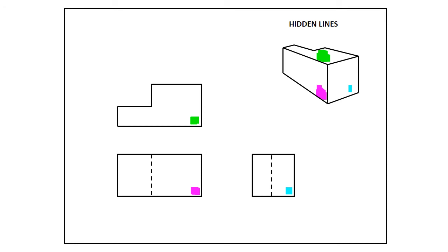Here's another one that's got some hidden lines in it, but you can see I've marked with the colors — the fluorescent green — they match up. We're taking our isometric view, which is up in the upper right-hand corner, and translating that into a front view, side view, and top view. The green matches up with the green face. If we go to the pink face and look straight on at it, we can't see the notch that's cut out, so that's represented with a hidden line — a dashed line. Coming around to the blue side, we've got a hidden line again because that notch is cut out.